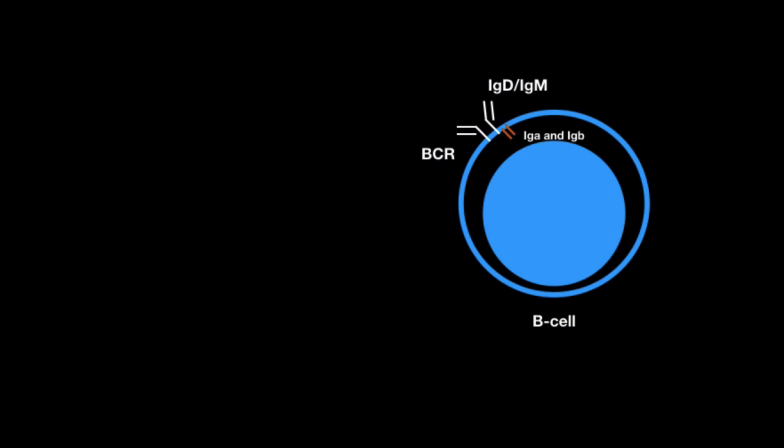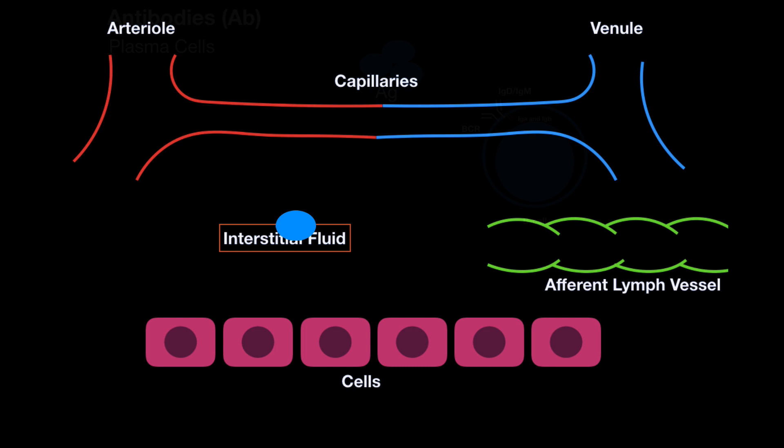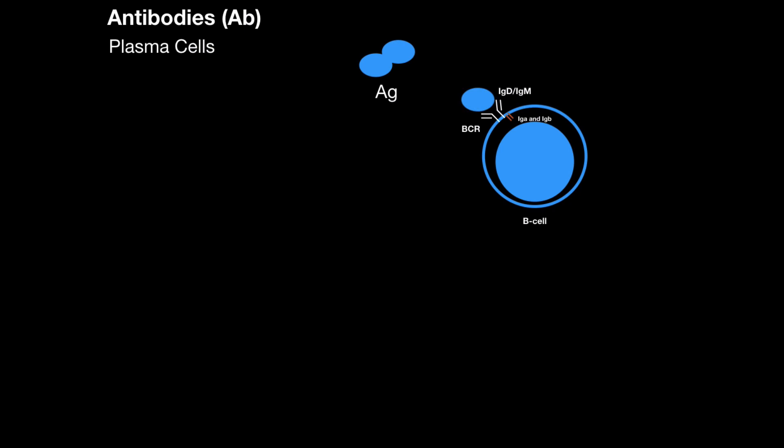Let's imagine this antigen was caught from the interstitial fluid from the lymph vessel and then brought to the cortex of the lymph node. And it was unlucky enough to accidentally fit to the membrane-bound antibody on the surface of the B-cell. It's then going to perform an antigen B-cell receptor endocytosis and present a fragment of the antigen on the MHC class 2 molecule.